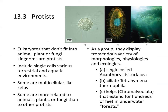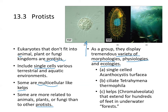Protists are eukaryotes that do not fit into the animal, plant, or fungi kingdoms. They include single-celled organisms in terrestrial and aquatic environments, though some happen to be multicellular like kelp. Some are more related to animals, plants, or fungi than to other protists. As a group they display a variety of morphologies, physiologies, and ecologies.